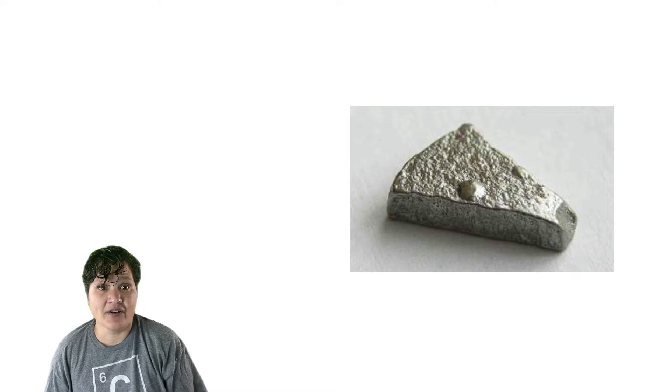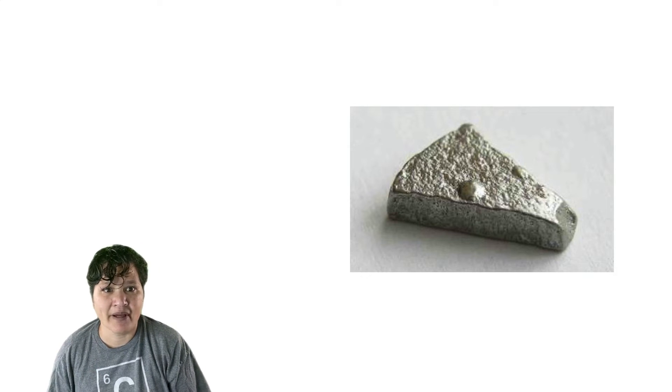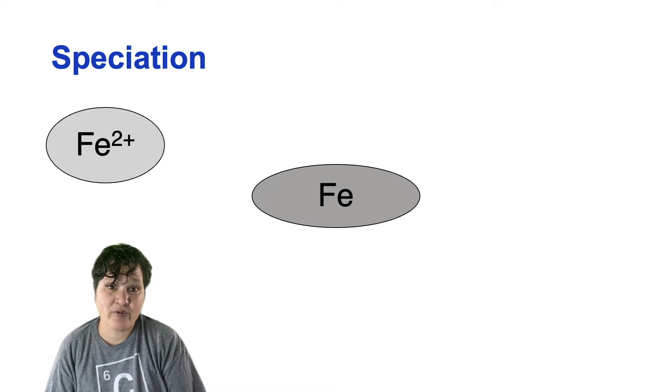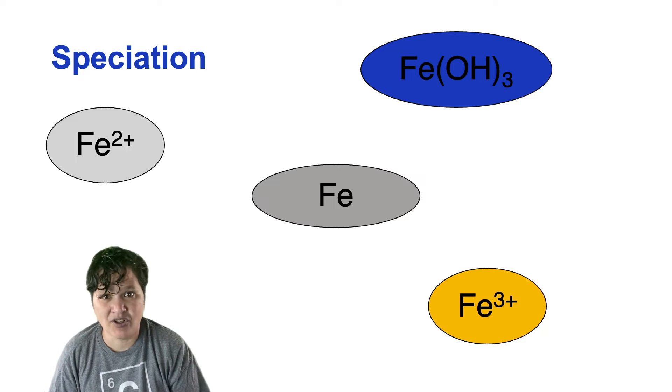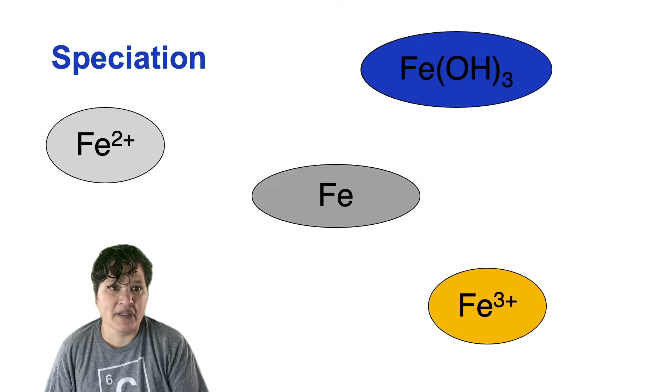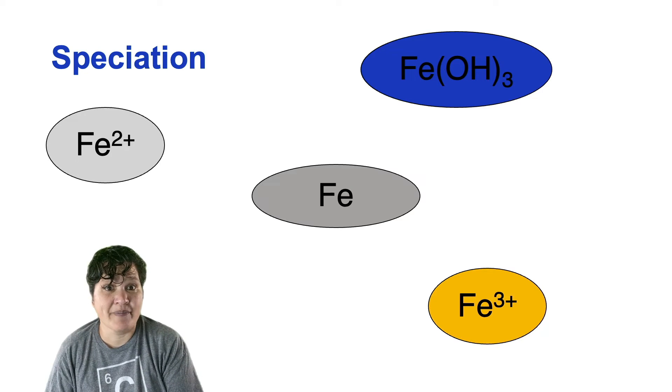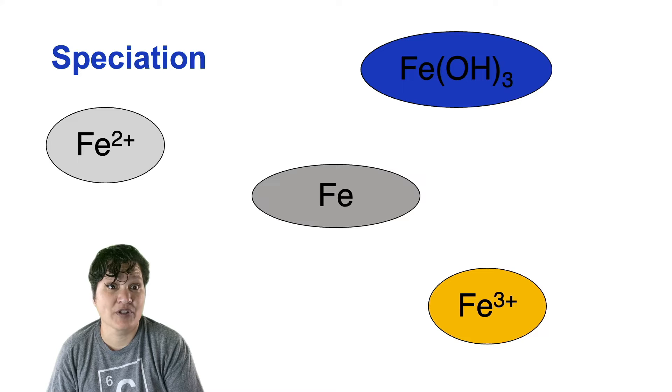For example, think of iron. You might think of iron as a big lump of metal, but it rarely shows up that way. It might be present as an iron 2 plus ion, or an iron 3 plus ion, or iron 3 hydroxide, or you get the picture. Whatever form they occur in depends on the nature of their surroundings, and an EH-PH diagram is designed to help you see what form an element would take under particular conditions.